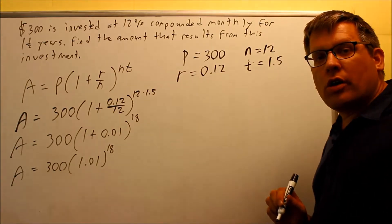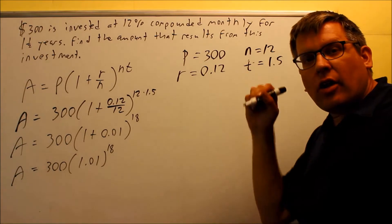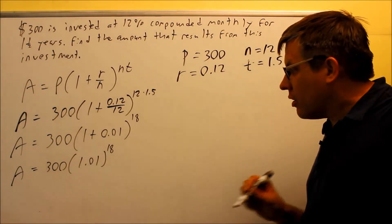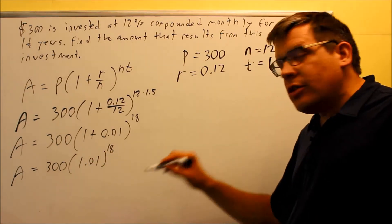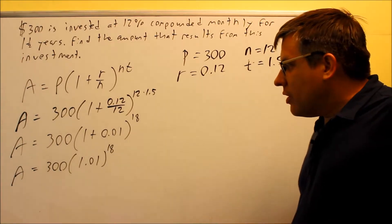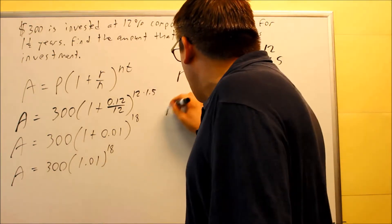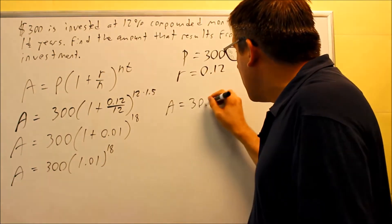We want to do this one in our calculator. To do that, you want to use the caret key or the exponent key. You would take 1.01, you hit your caret key, 18. You get a number for that. Then you'll multiply by 300. So you don't need to write out all these steps, but I'm going to show you what you should be getting in your calculator.